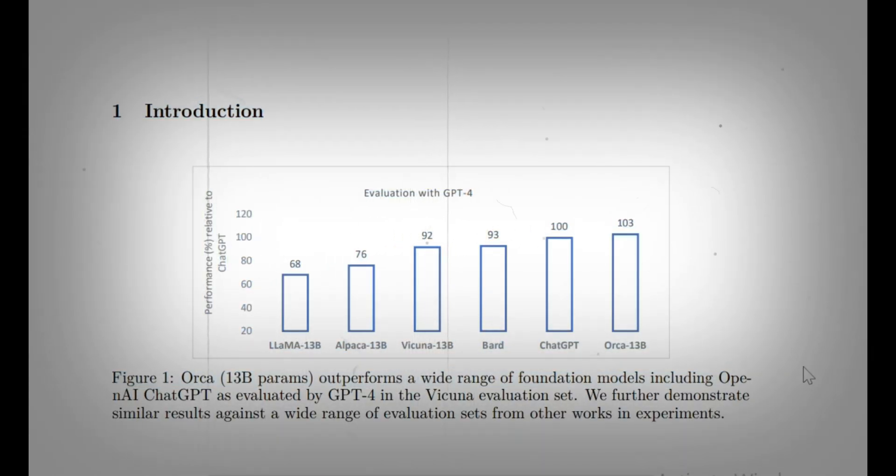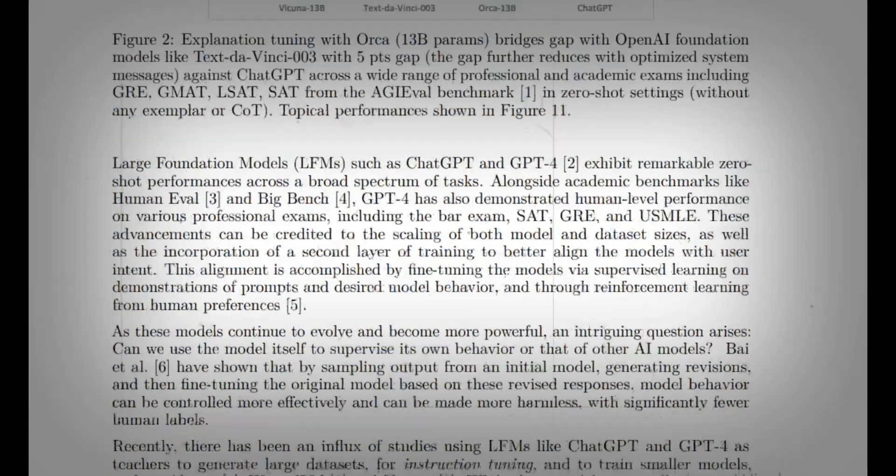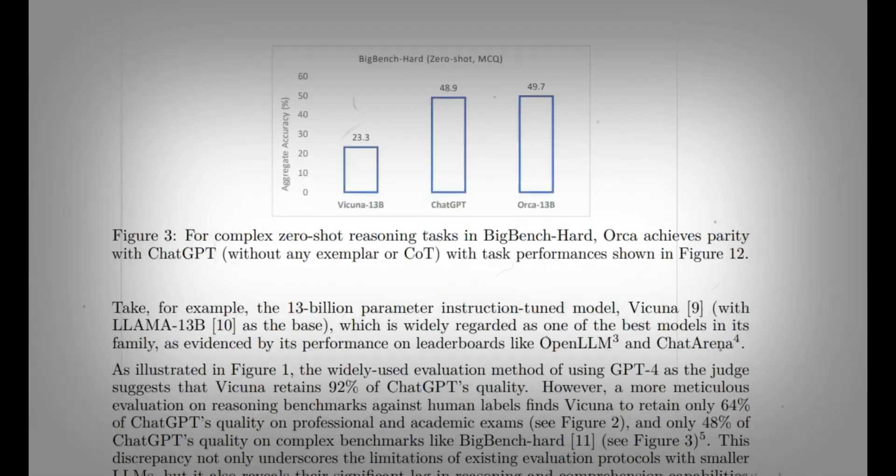While larger models like GPT-4 are undeniably powerful, their training and running costs often make them less accessible to many. Smaller models, on the other hand, are more efficient but can sometimes lack deep reasoning skills. That's where Orca comes in.